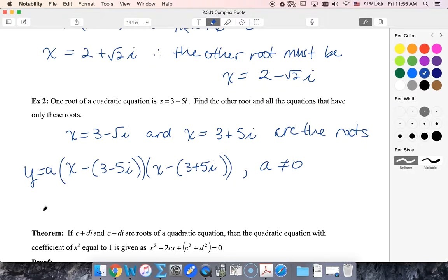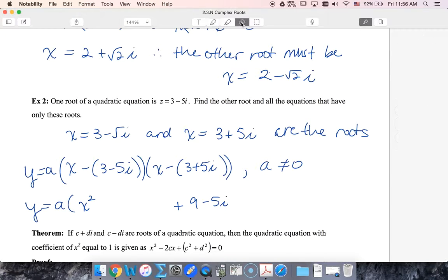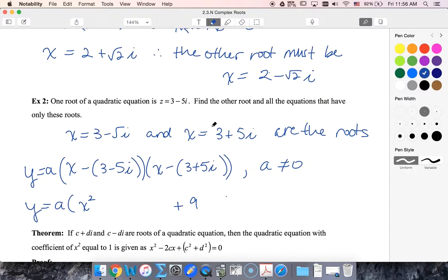So I could expand this and see that I'm going to have the form x squared. So thinking about these two, because these are conjugate pairs, when I multiply them I know at the end I'm going to have plus 25i squared, but of course minus 25i squared is going to be the same as plus 25.